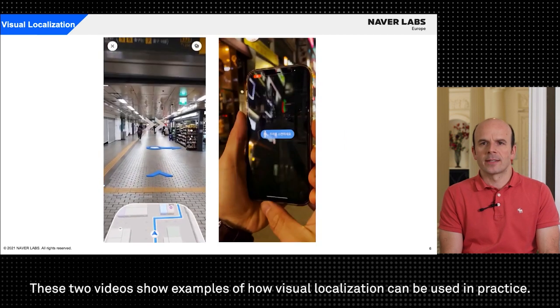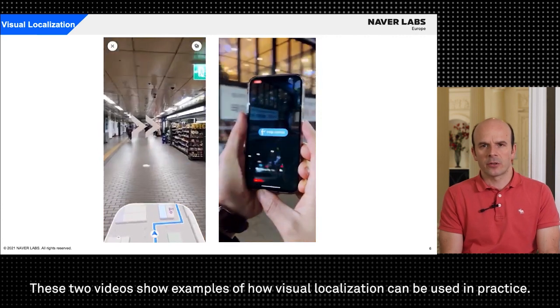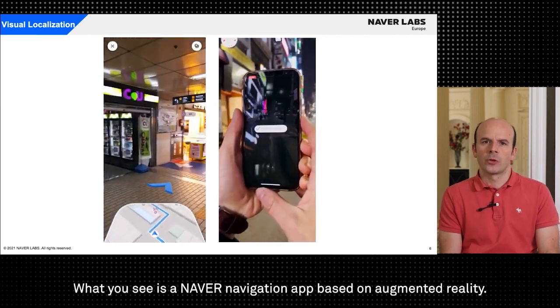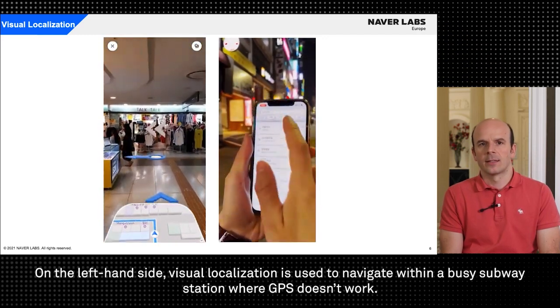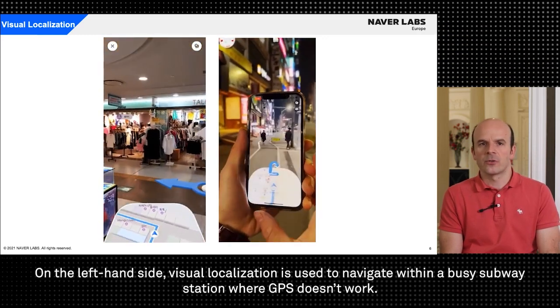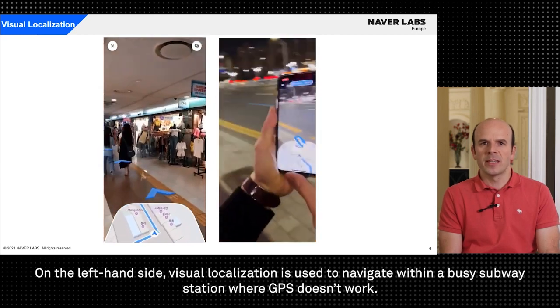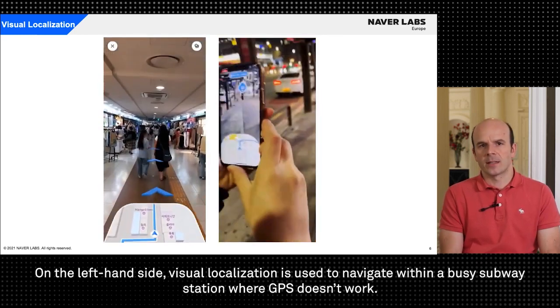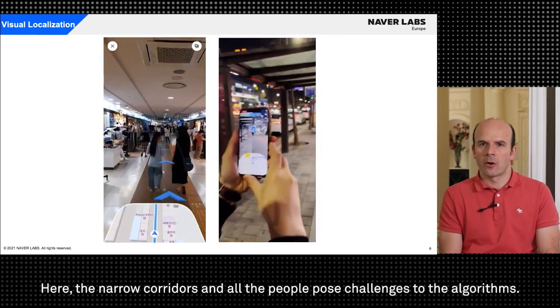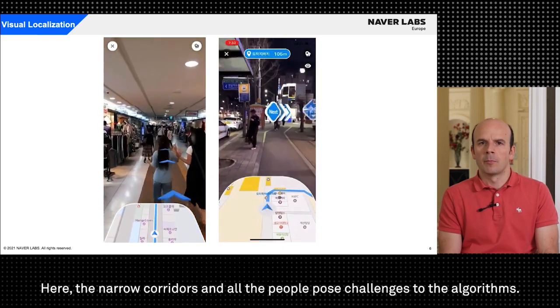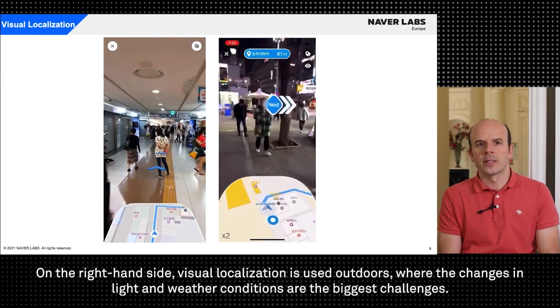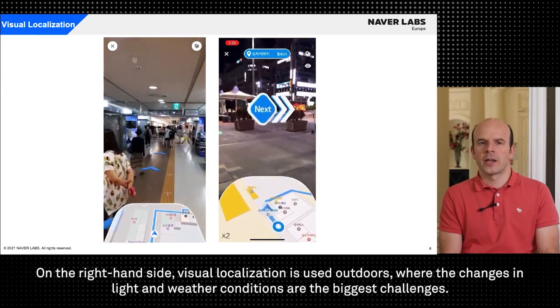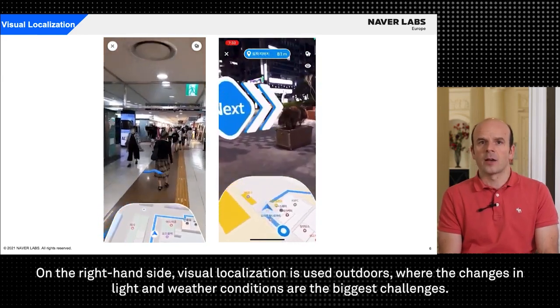These two videos show examples of how visual localization can be used in practice. What you see is a Naver navigation app based on augmented reality. On the left hand side visual localization is used to navigate within a busy subway station where GPS doesn't work. Here the narrow corridors and all the people pose challenges to the algorithms. On the right hand side visual localization is used outdoors where the changes in light and weather conditions are the biggest challenges.